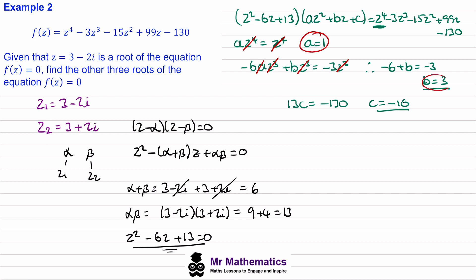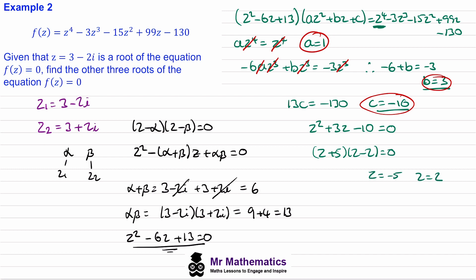With a, b, and c determined, our second quadratic factor is z squared plus three z minus ten, which equals zero. This factorises as z plus five times z minus two, giving the real roots z equals negative five and z equals positive two. So the four roots in total are z1 equals three minus two i, z2 equals three plus two i, z3 equals negative five, and z4 equals positive two.